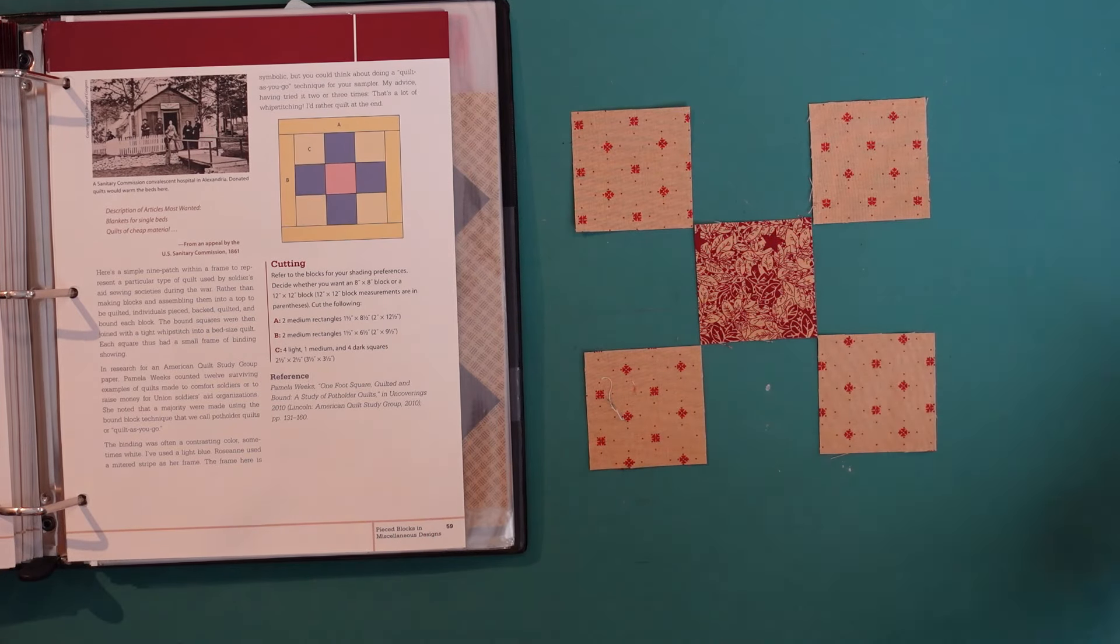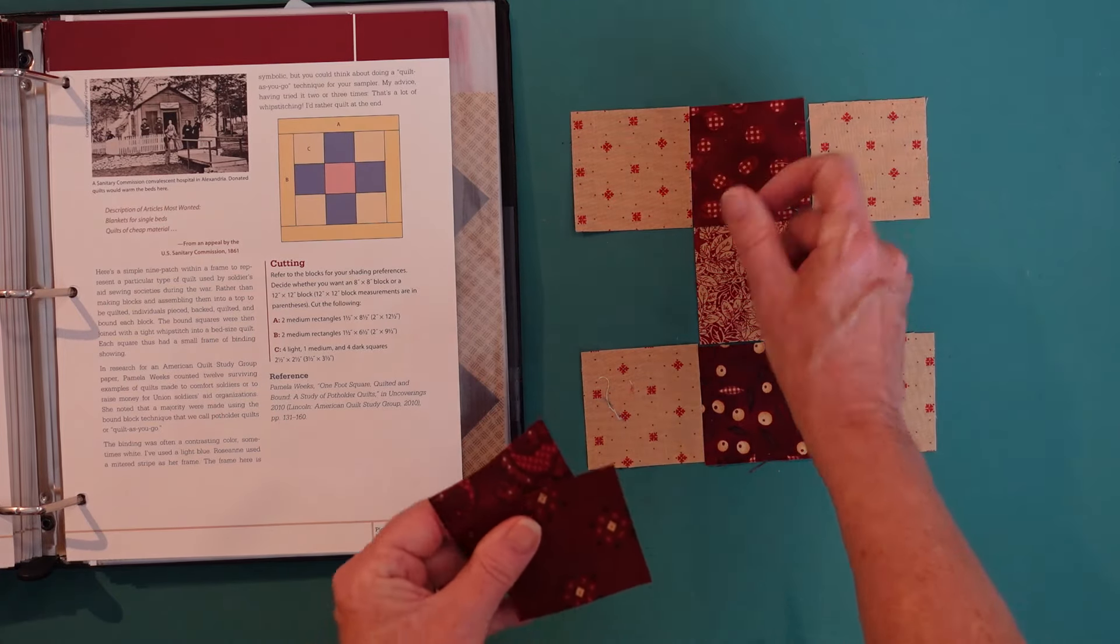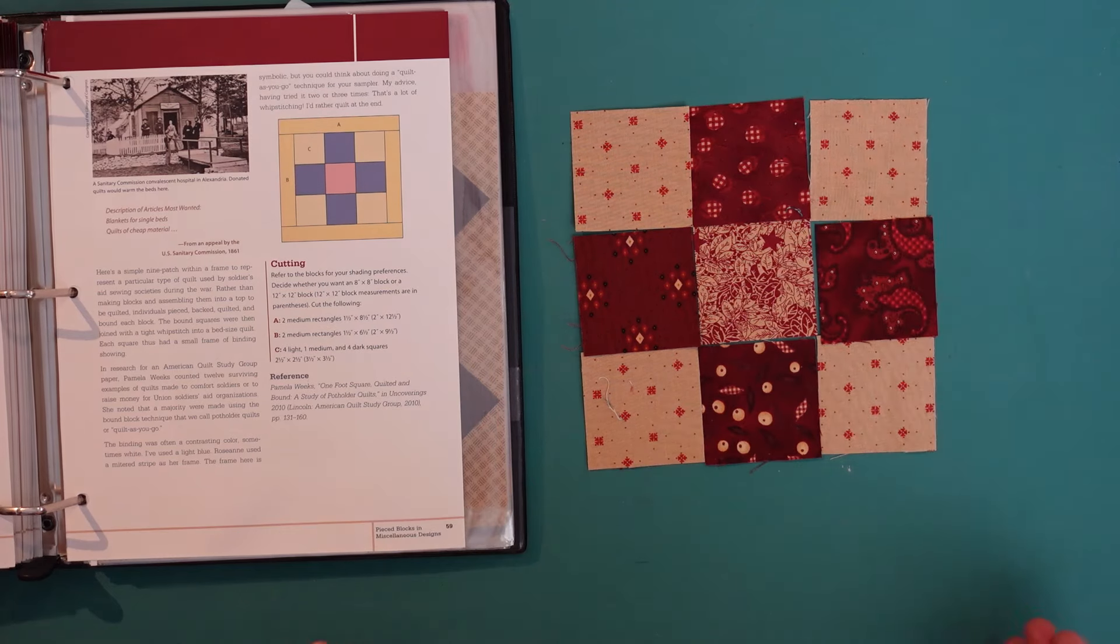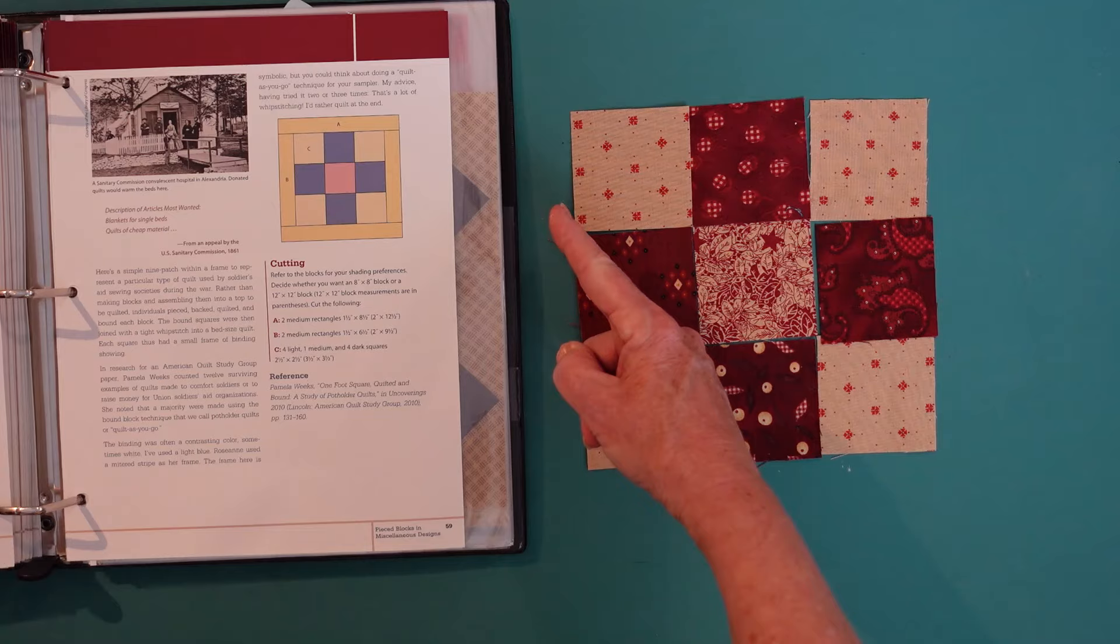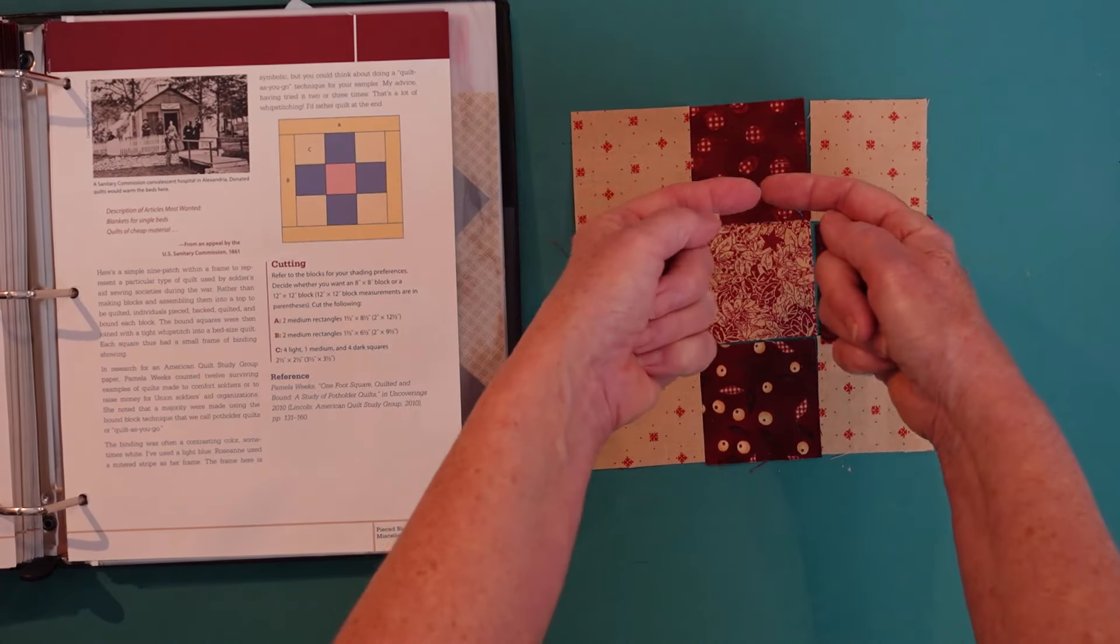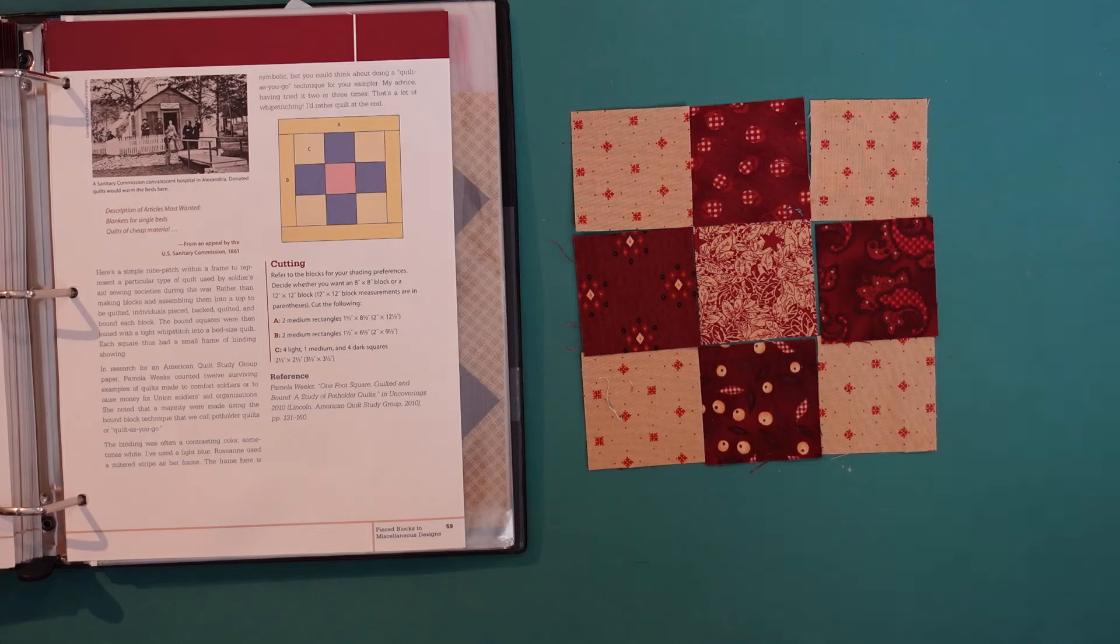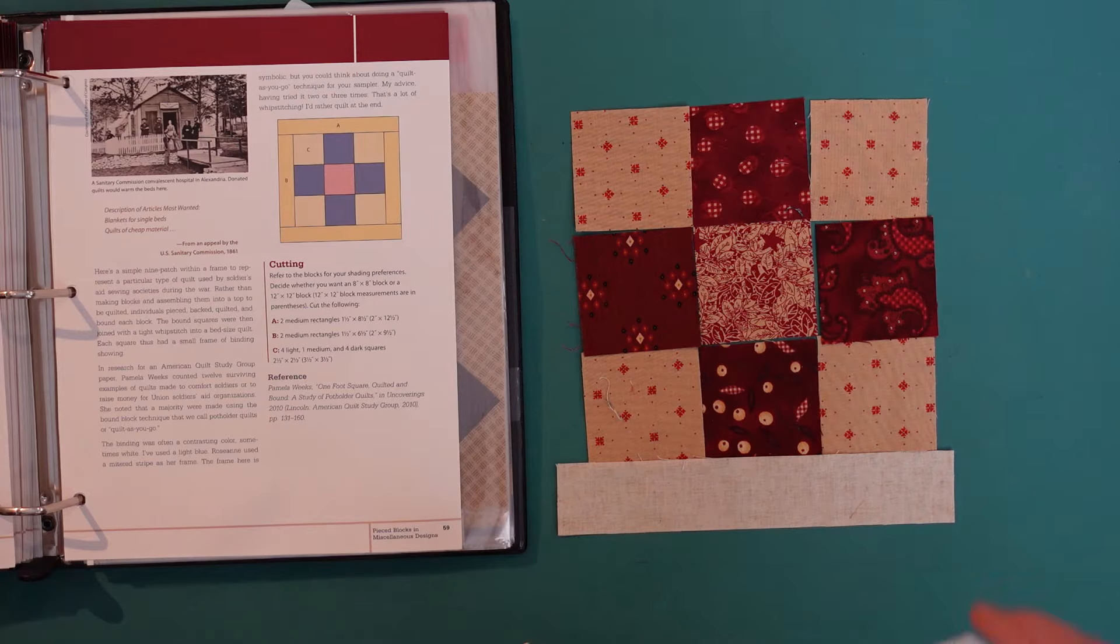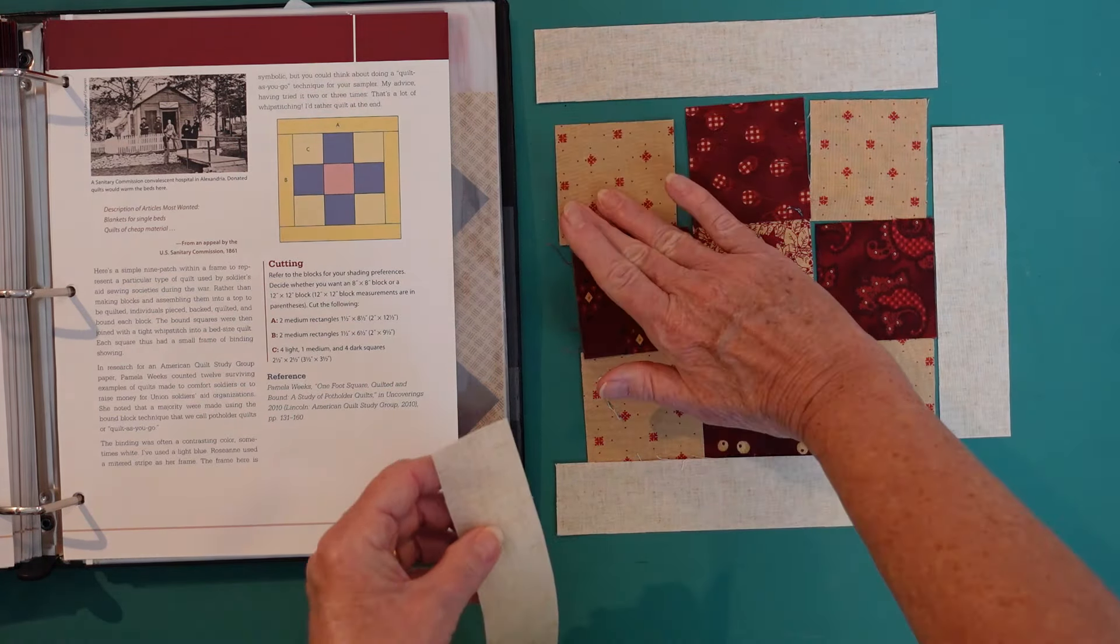You can use the same fabrics or scrappy fabrics if you're interested. Then go ahead and put your darks like this. You're going to sew it together the way you would normally sew a nine patch together. Put your pieces together in rows, press the seams towards the dark and then out and towards the dark. Once your block is assembled, you're just going to add the 1 inch strips around the outside. That will bring you up to an 8 inch finished block.